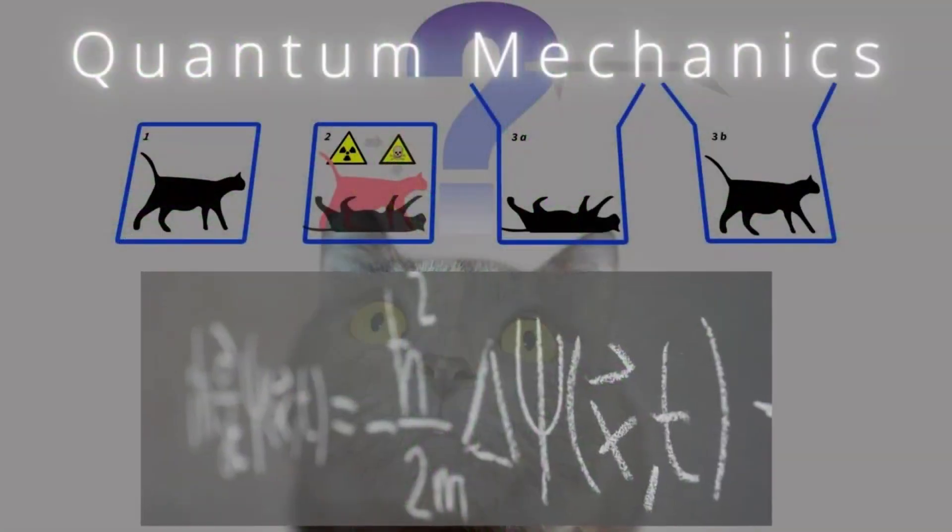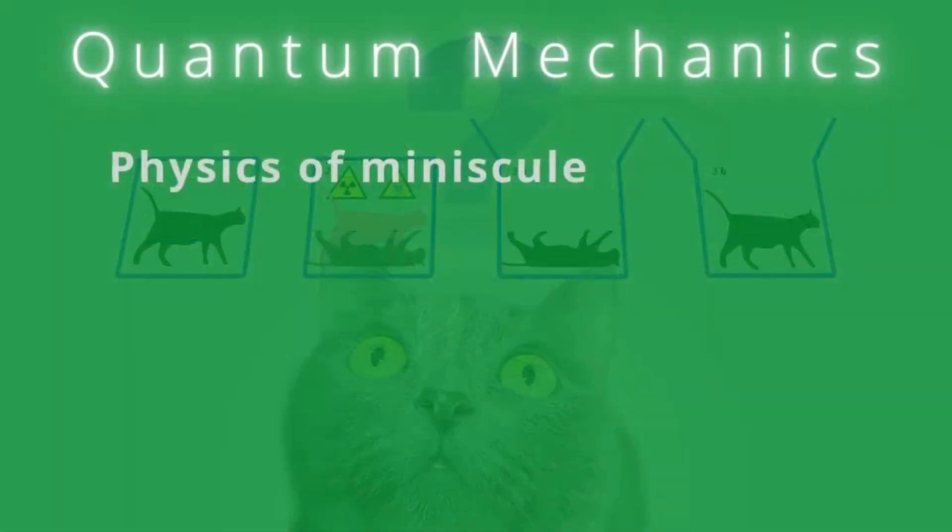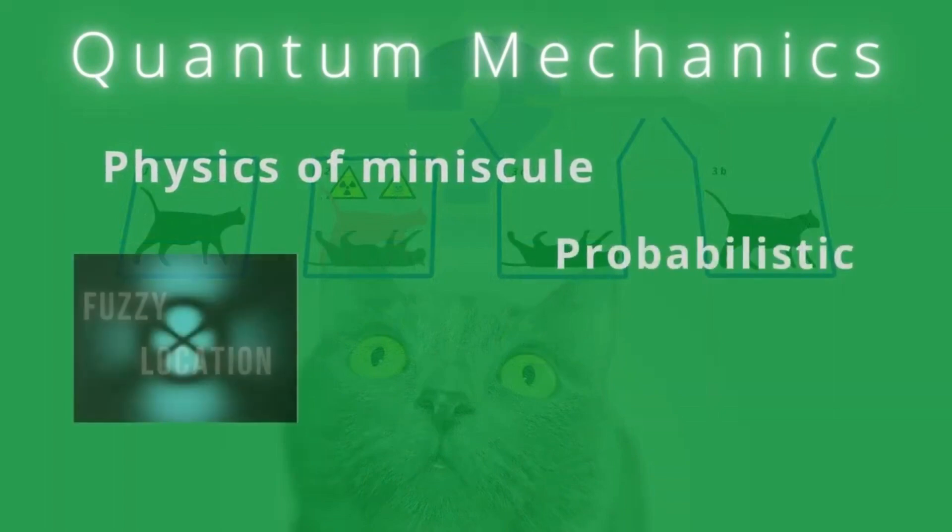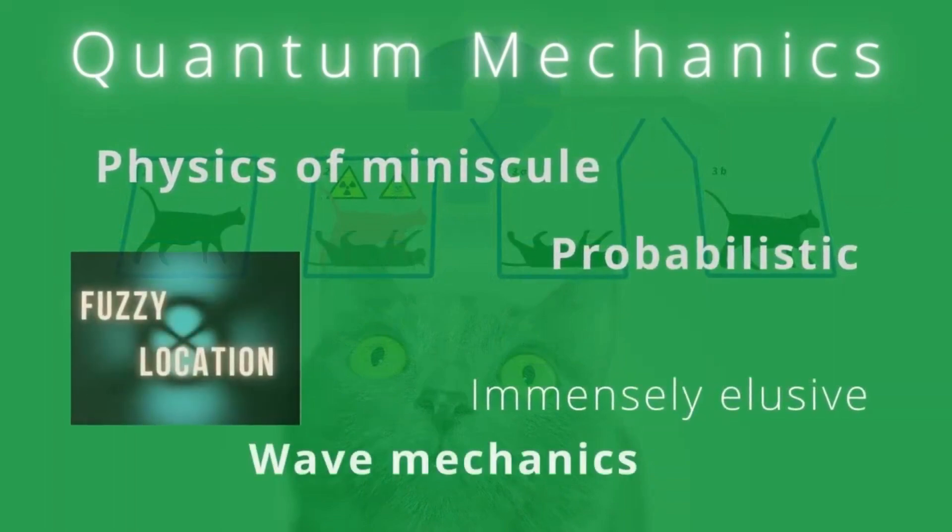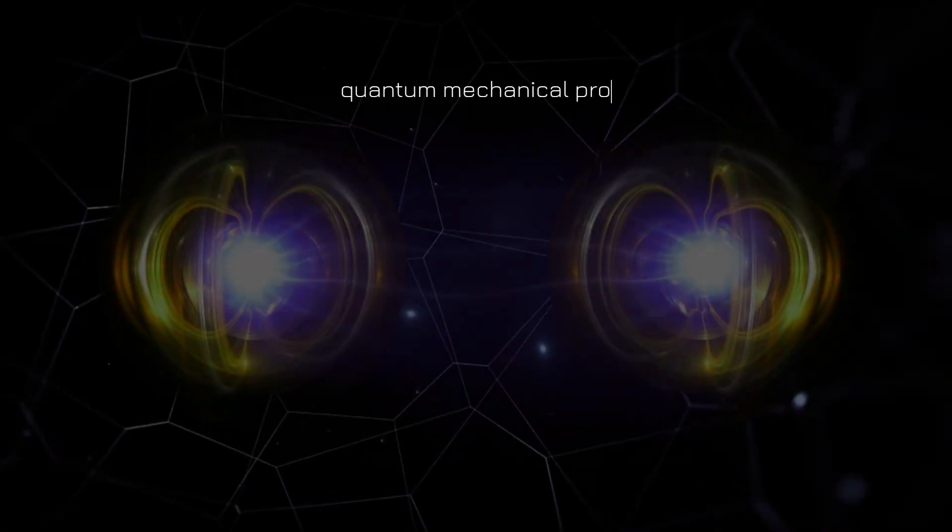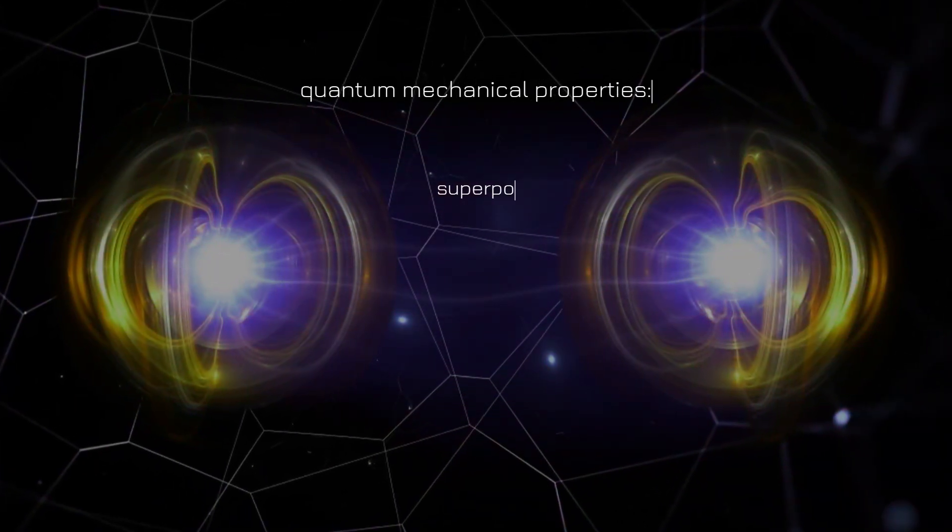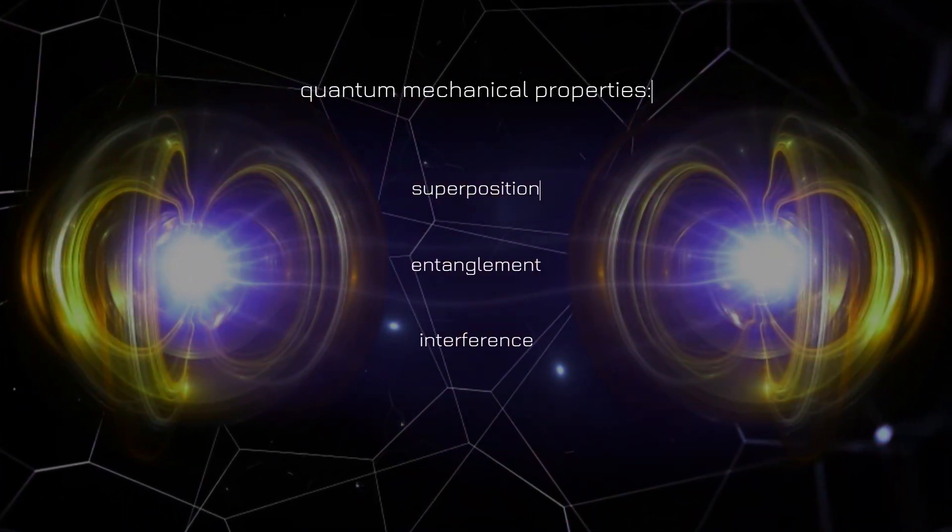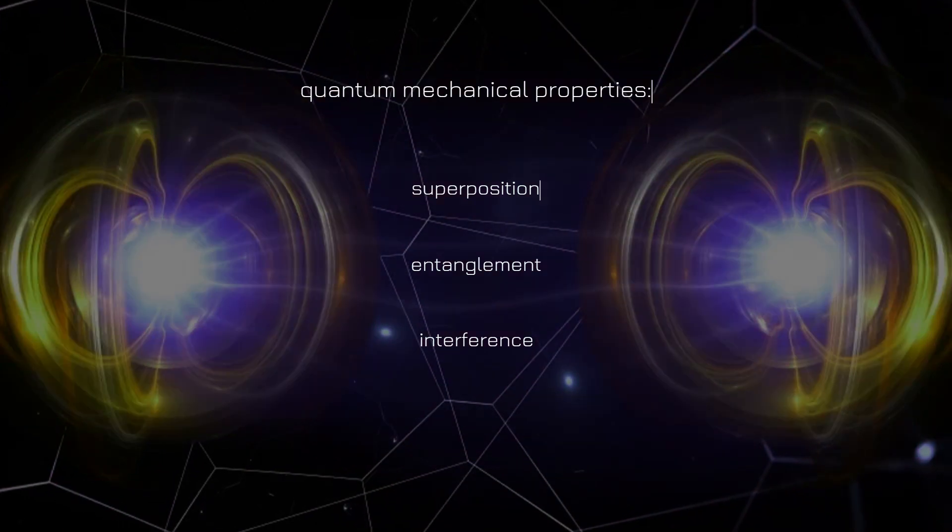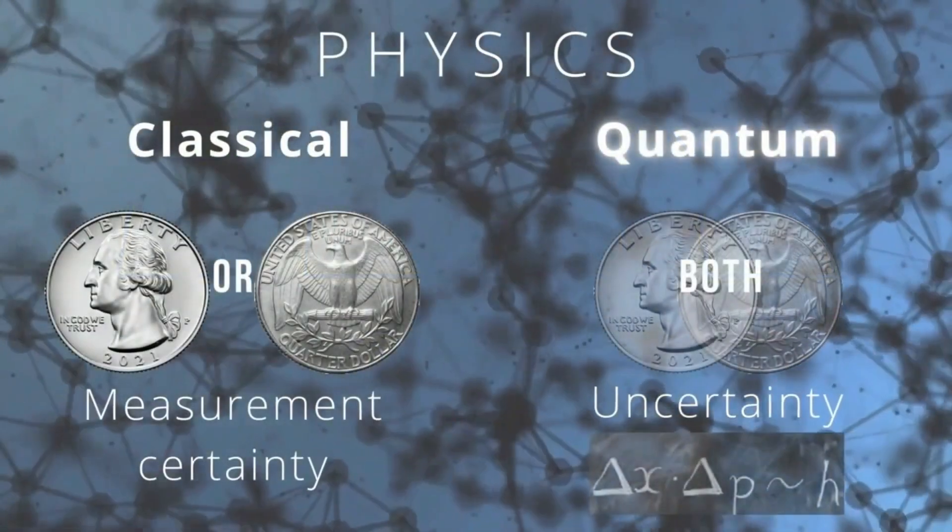Quantum computing is a potentially game-changing technology that uses the principles of quantum mechanics to perform calculations rapidly. Underlying properties of quantum mechanics consist of superposition, entanglement, and interference, of which there is no classical analog in classical or binary computing.